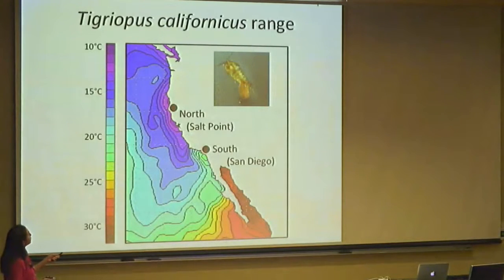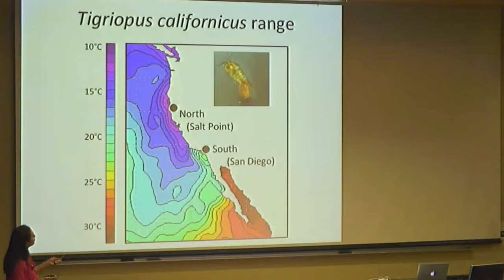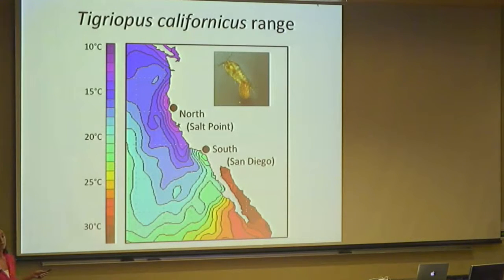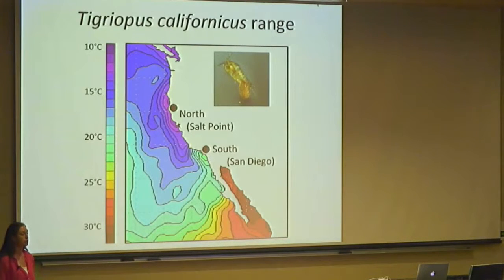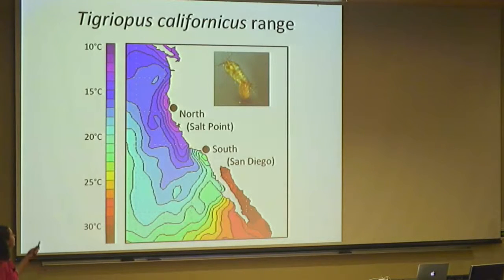These are two of the sampling locations I'm working with on this project: one in the north at Salt Point, and one in the south in San Diego, along the coast of North America into the Baja Peninsula. One of the cool things about tigriopus is the distribution of temperatures in which they occur. The map here is showing sea surface temperature — darker blue colors are colder, and the reds, oranges, and yellows are warmer. This species occurs from Alaska all the way down into Mexico, across a huge range of temperatures.